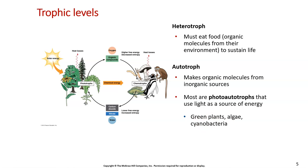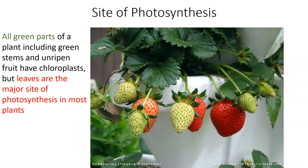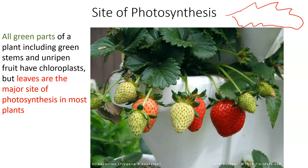Photosynthesis can occur on any part of the plant that's green, including small stems and any unripened fruit — they all have chloroplasts. But the major place photosynthesis occurs is our leaves. One of those reasons is that our leaves are spread out and have a very high surface area. If you look at a leaf, it's going to be really wide, and that allows the sun to hit that leaf at many different points.